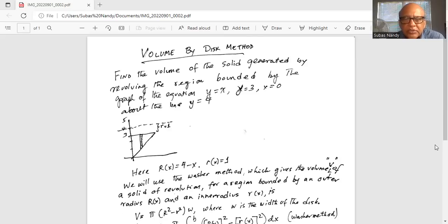We will use the washer method which gives the volume V of a solid of revolution for a region bounded by an outer radius R(x) and an inner radius r(x). The first one is capital R(x), outer radius. Inner radius is small r(x).